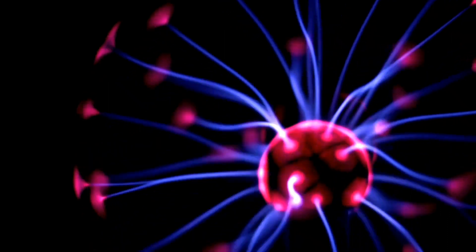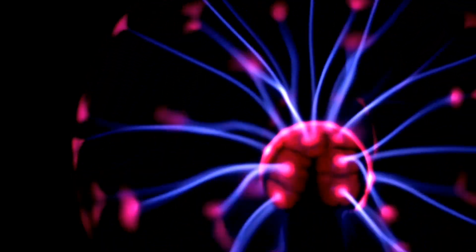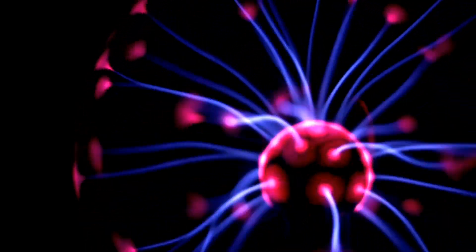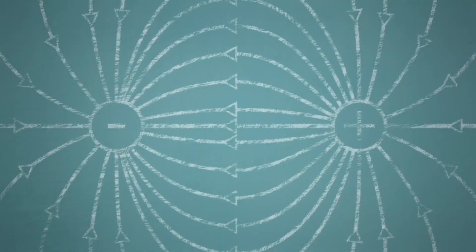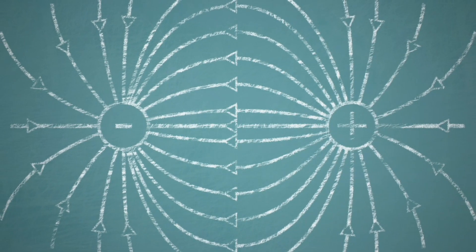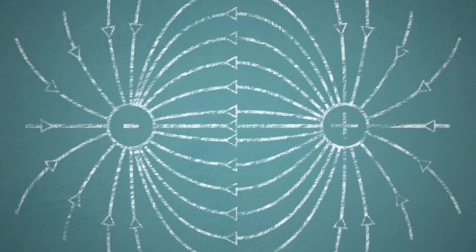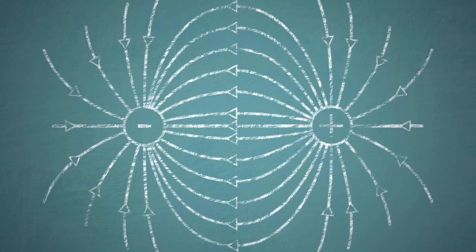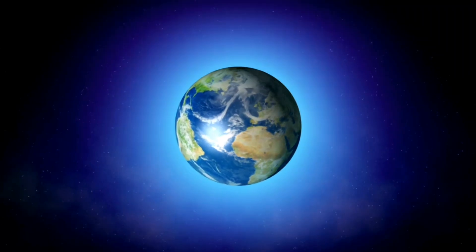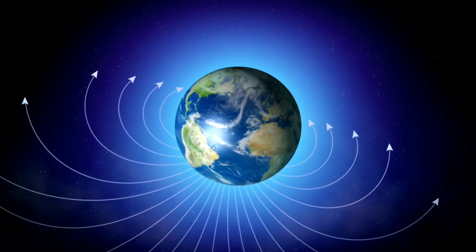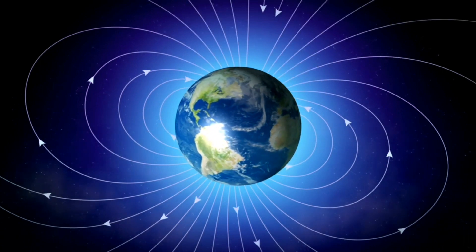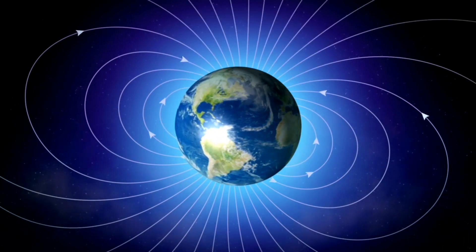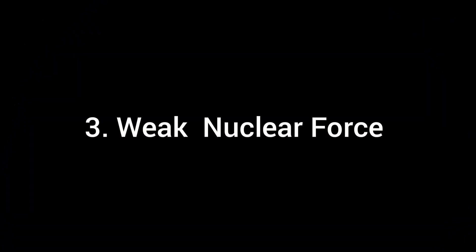While electromagnetism is stronger than gravity, it is often balanced out in large objects by the equal numbers of positive and negative charges that form neutral atoms. For example, earth has a magnetic field due to electric currents in its liquid core; however, earth itself is electrically neutral.